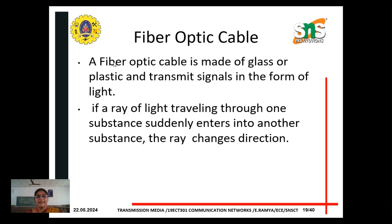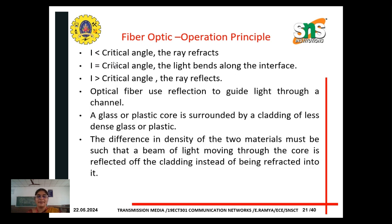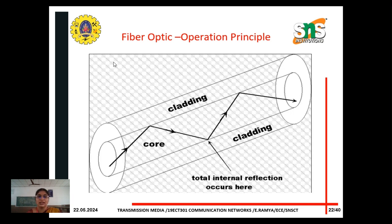Finally, in guided medium, fiber optic cable. A fiber optic cable is made of glass or plastic and transmits signals in the form of light. If a ray of light traveling through one substance suddenly enters into another substance, the ray changes direction. Optical fiber uses reflection to guide light through a channel. In this diagram, we can understand the principle of fiber optic operation — it has a core in the center and cladding on the outside.